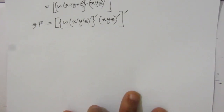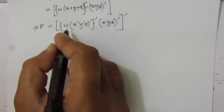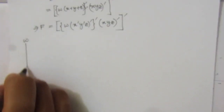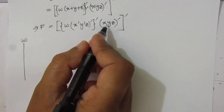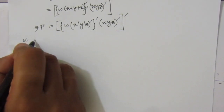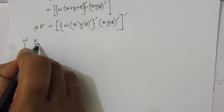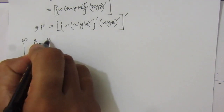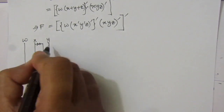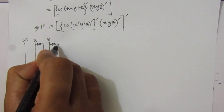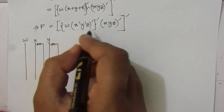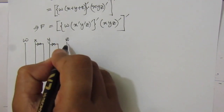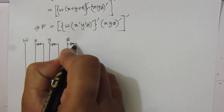Let us draw this logic diagram. We will have inputs W, x, y, z. W has no bar, so this is the W input line. Then we have x and x̄ — this is the x line, and we use an inverter to get x̄. Similarly, y is the y input, and we use an inverter to get ȳ. And we have input z — this is the z input — and we use an inverter to get z̄.